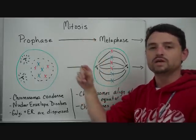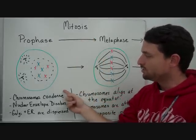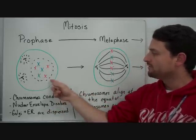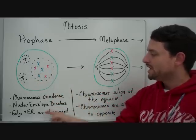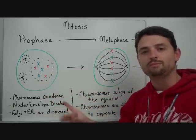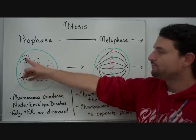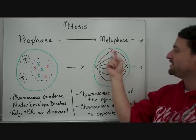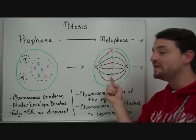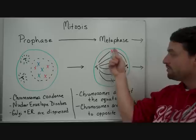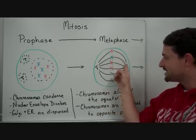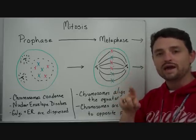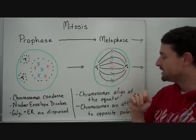Mitosis starts with what we call prophase. In prophase, you get the chromosomes condensed so you can see them, designated by the different colored Xs. The nuclear envelope dissolves, and the Golgi and ER are dispersed. You also see the formation of spindle fibers starting. After prophase is metaphase — in metaphase, the chromosomes line up in the center or equator of the cell, connected to spindle fibers at the kinetochore.